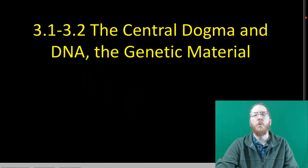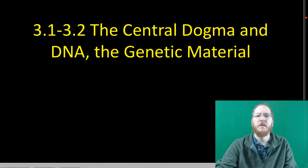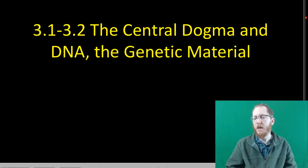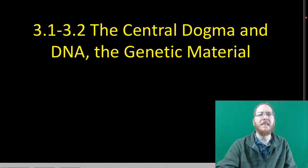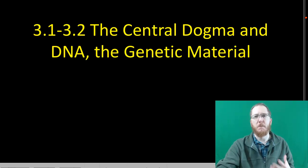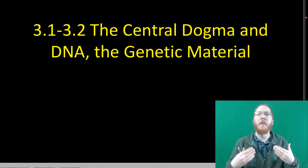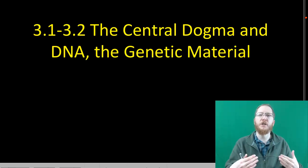Welcome to section 3.1 and 3.2. We're going to discuss the central dogma of biology, which will be the overarching themes of how things get done biologically. And we're going to discuss how DNA was ultimately discovered to be the genetic material. Because there was a time where we didn't know. We weren't sure what was able to pass on our characteristics from one generation to the next.